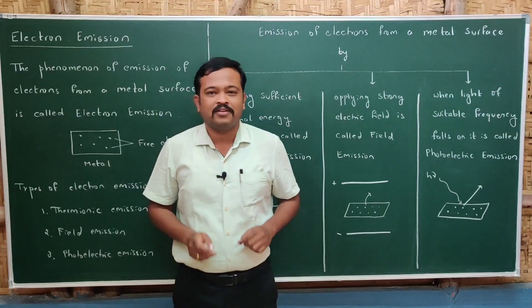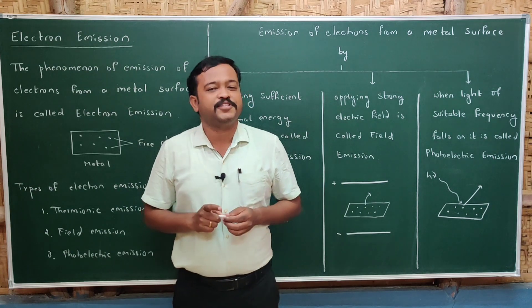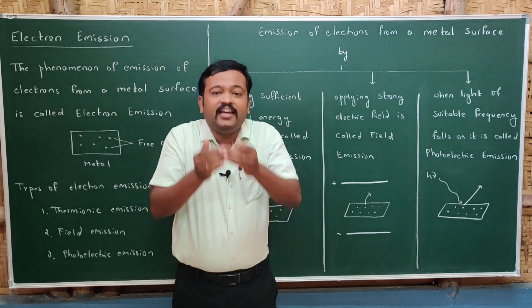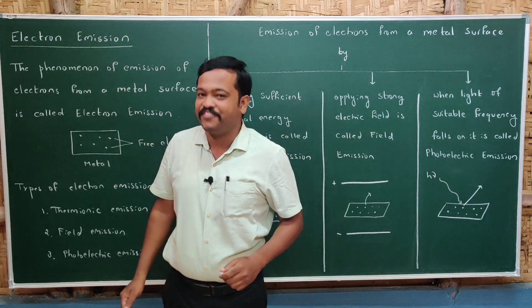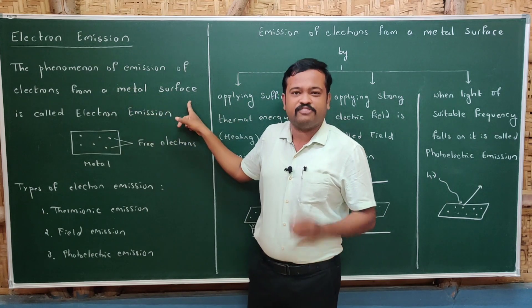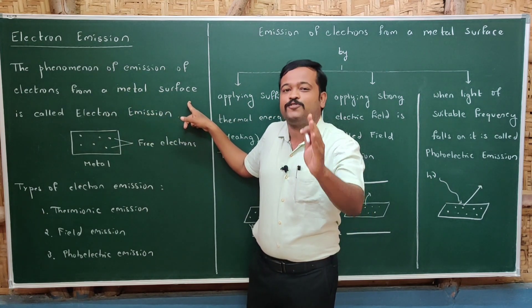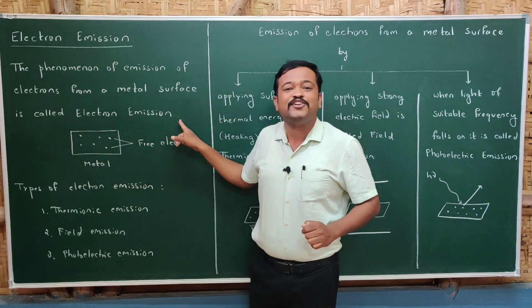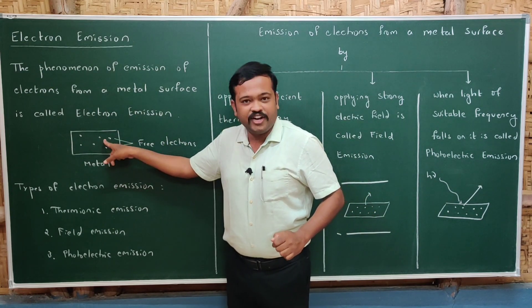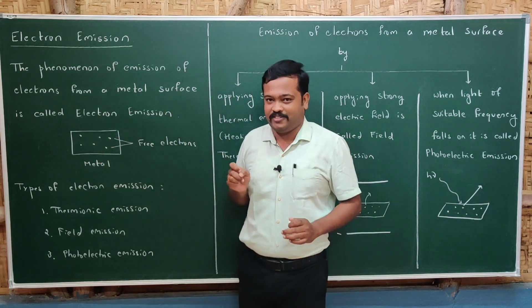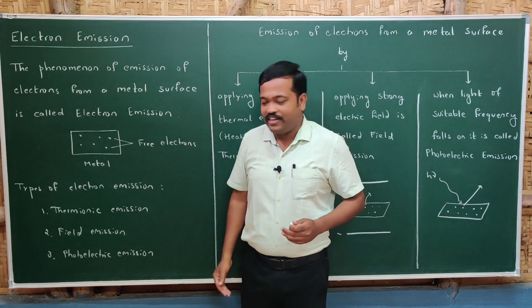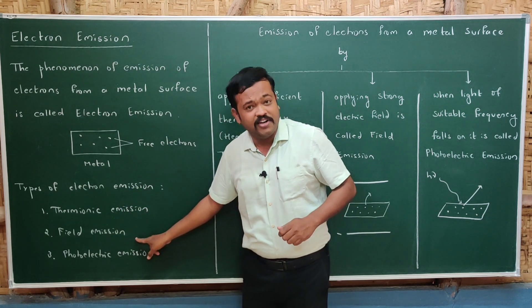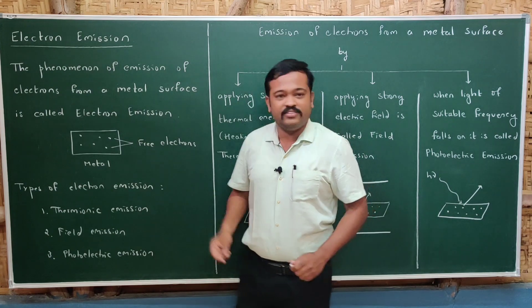Now let us start with the chapter topic: electron emission. A metal is a substance which consists of free electrons. If some amount of energy is given to these electrons, they come out of the metal. The phenomenon of emission of electrons from a metal surface is called electron emission. Based upon which type of energy you are giving, we can divide electron emission into three types: thermionic emission, field emission, and photoelectric emission.